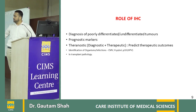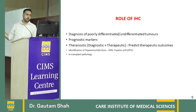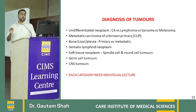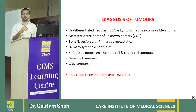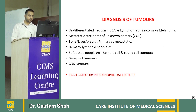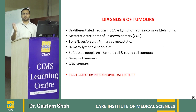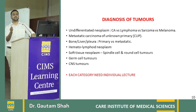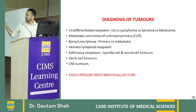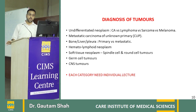In addition to cancer, IHC is used for identification of organisms in infections and in transplant pathology. Diagnostically, in cases of undifferentiated neoplasm on H&E staining, we cannot further categorize without IHC — whether it is metastatic carcinoma to bone, liver, or pleura, primary versus metastatic, lymphomas, soft tissue neoplasms such as spindle cell sarcoma or malignant round cell tumors, germ cell tumors, and CNS tumors — all require IHC for classification.